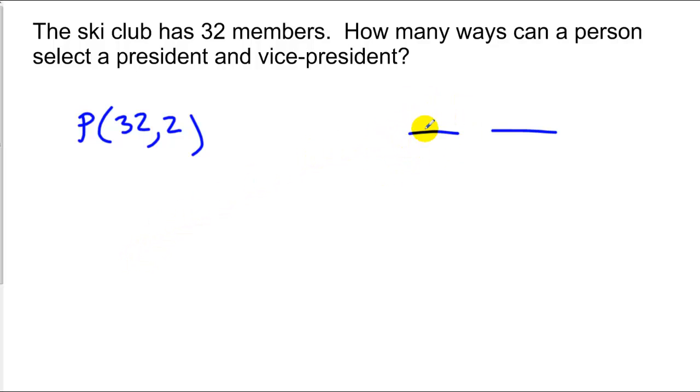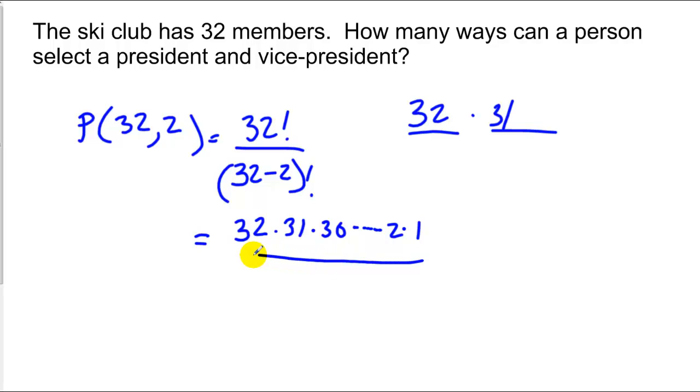I could say, remember, the president spot, I've got 32 members from which to choose, and then the vice president spot, I've got 31 members to choose. Once again, we've got 32 factorial over (32 minus 2) factorial. Let's just see how this works out, that's 32, 31, 30, just keeps going until you get down to 1, and on the bottom, we have 30, 29, you go until you get down to 1, all of these cancel, and we're left with 32 times 31, which is what we had right over here.